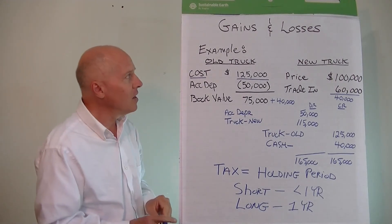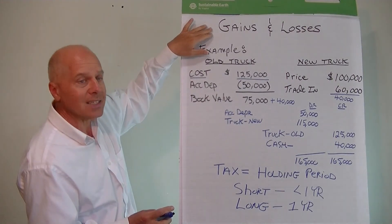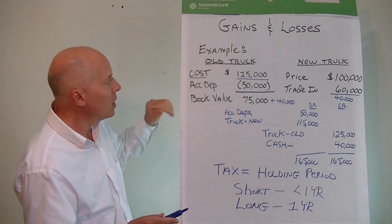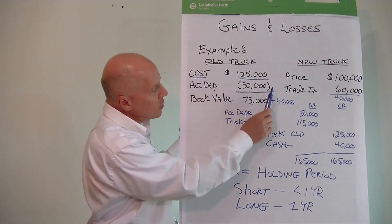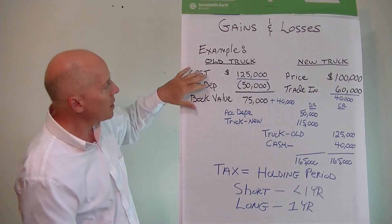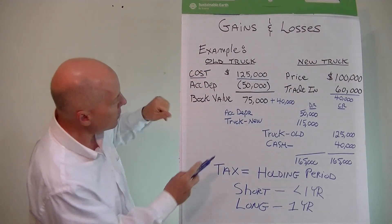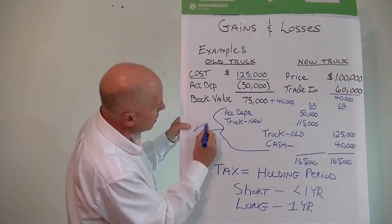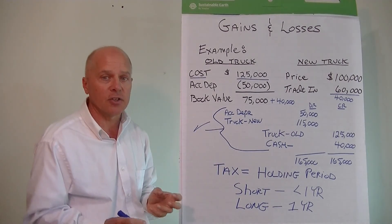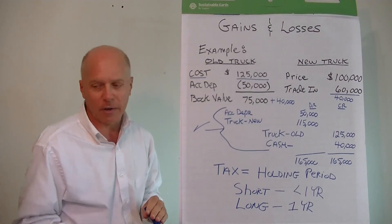So that's a quick rundown of gains and losses on fixed assets. This is something you may encounter where it gets a little tricky is when you have similar assets that are traded in where you don't recognize gains and losses and you just simply have to go through this accounting transaction like this. So now we'll go on to some other things that you need to know in the world of accounting.